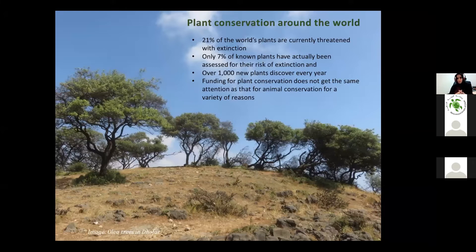How does the conservation of plants look around us? From the data, about 21% of those plants are currently threatened with extinction, and only 7% of known plants have actually been assessed. So this 21% is only from 7% of known plants, and over 1,000 new plants are discovered every year around the globe. Also, funding for plant conservation does not get the same attention as that for animal conservation.